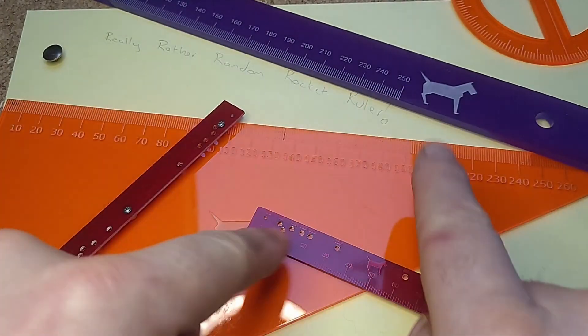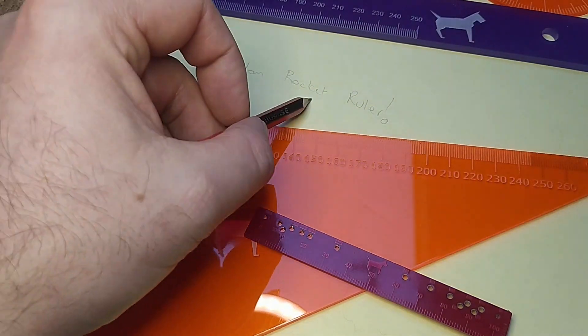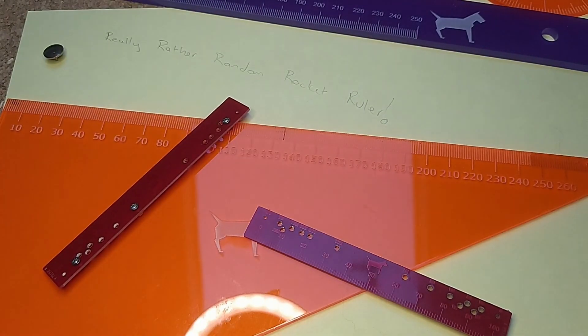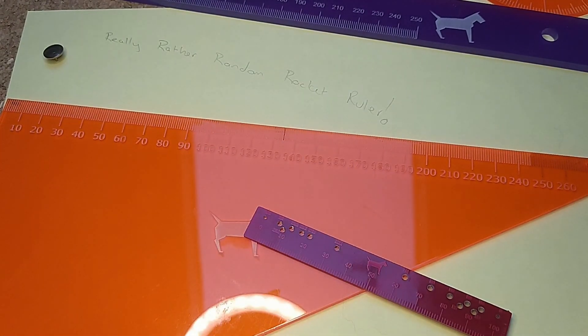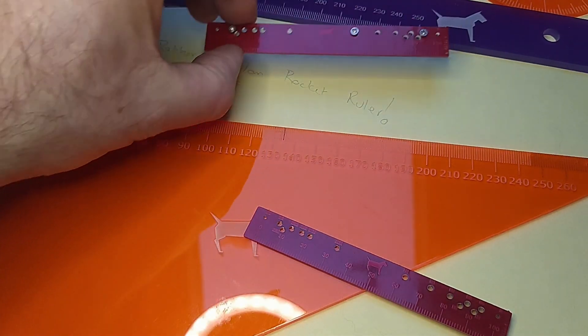Hello, and welcome to my rather messy desk for this really rather random Rocket Ruler video. So first of all, I've got a bit of a cold. Well, actually, I've got a stinker of a cold, so I sound a little bit ropey, or ropier than normal. So I'll try not to cough, but if I do, apologies.